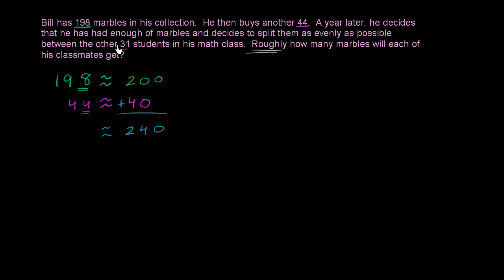Now how many students is he going to distribute them between? There's a total of 31 students. But once again, let's round this. If we round this to the nearest 10, we're going to round down because our ones place has 1 in it, it's less than 5. So we're going to round to the 10 below 31, so that is 30.